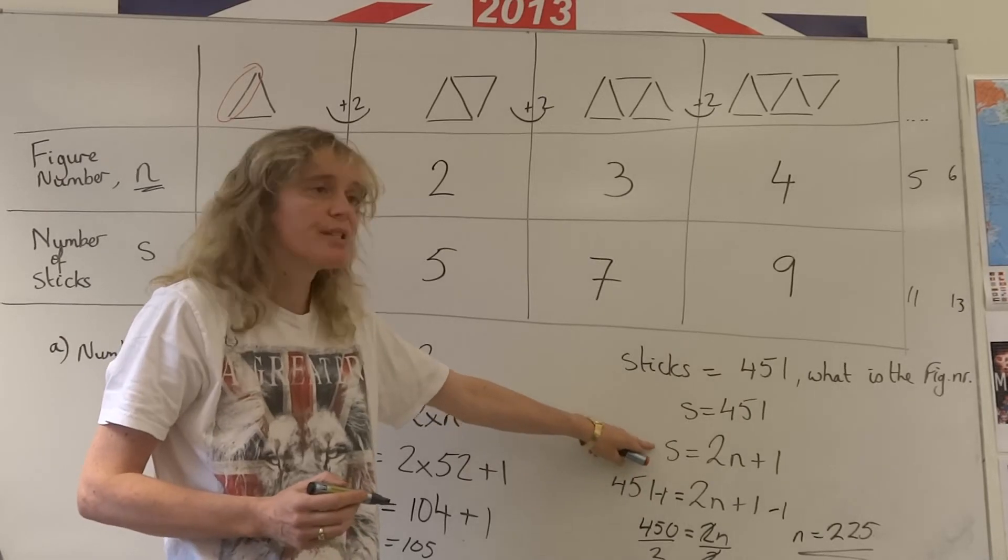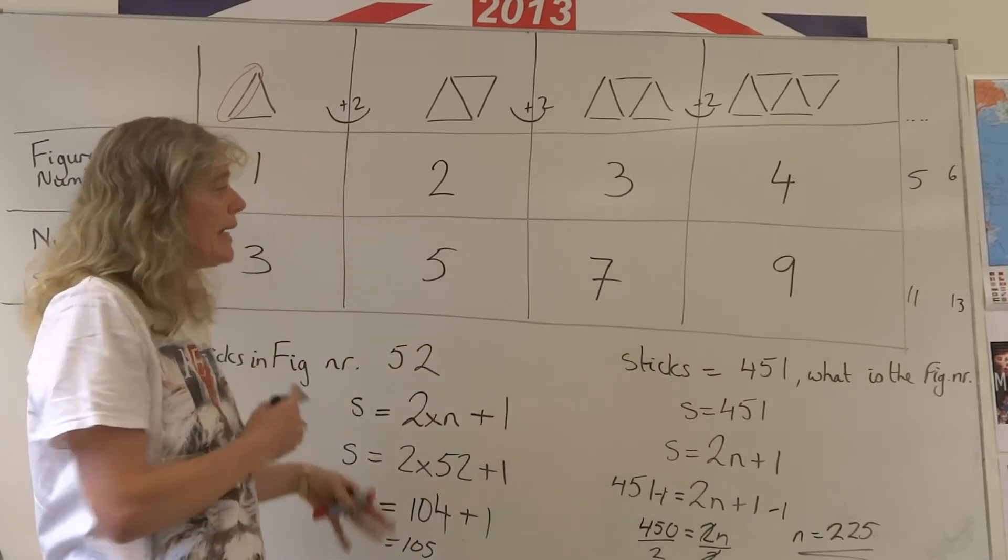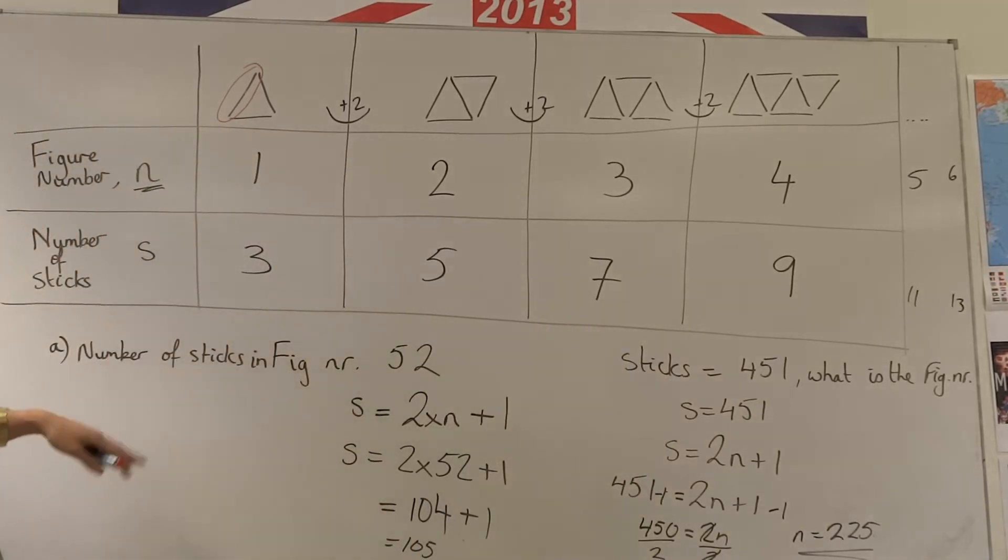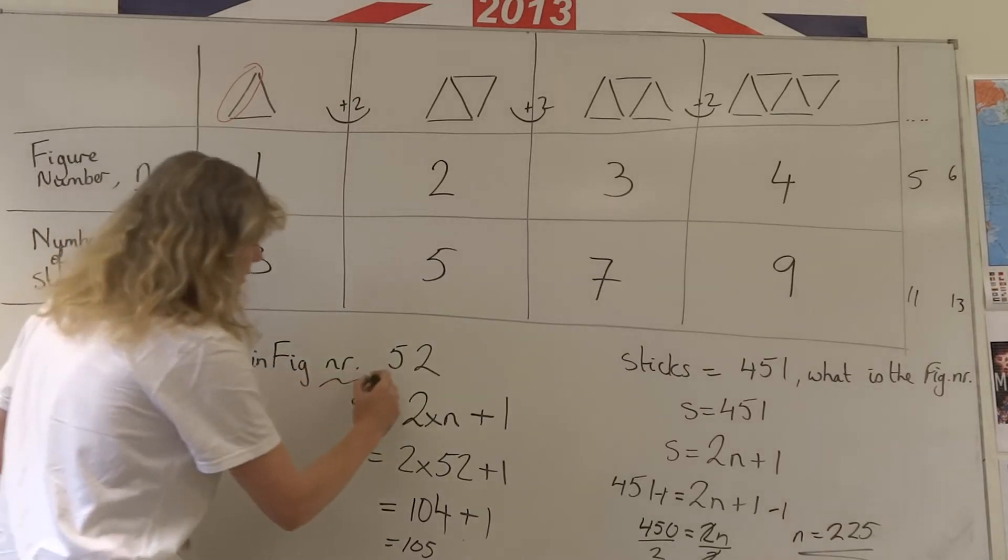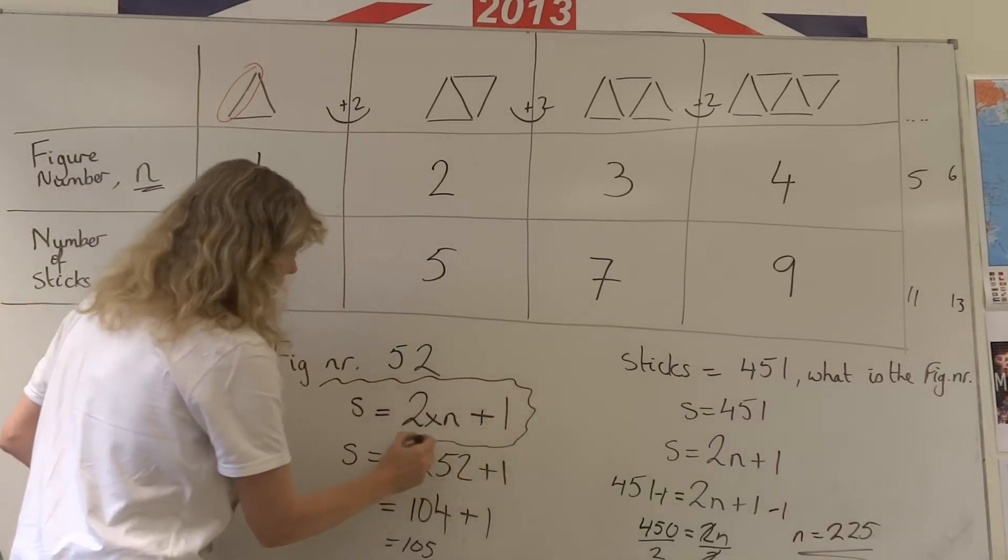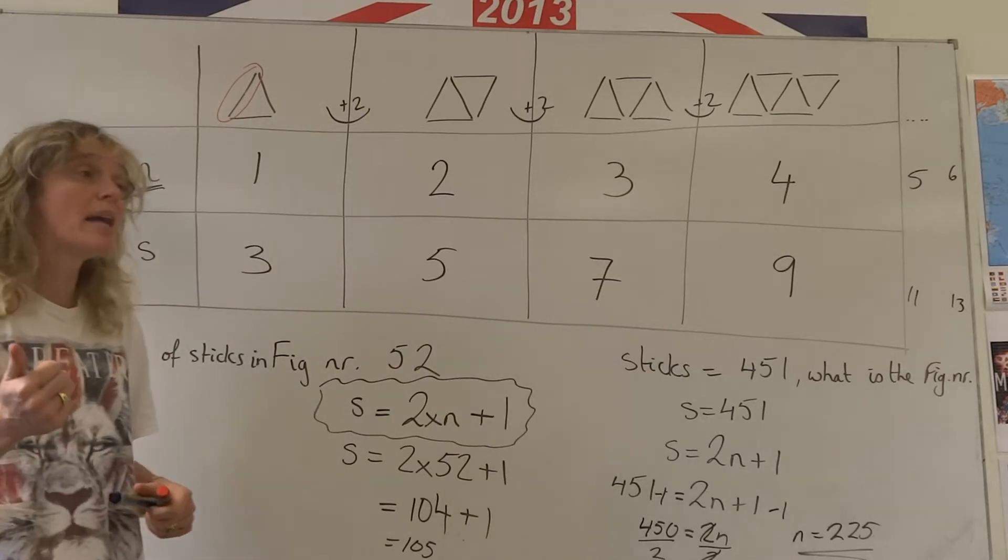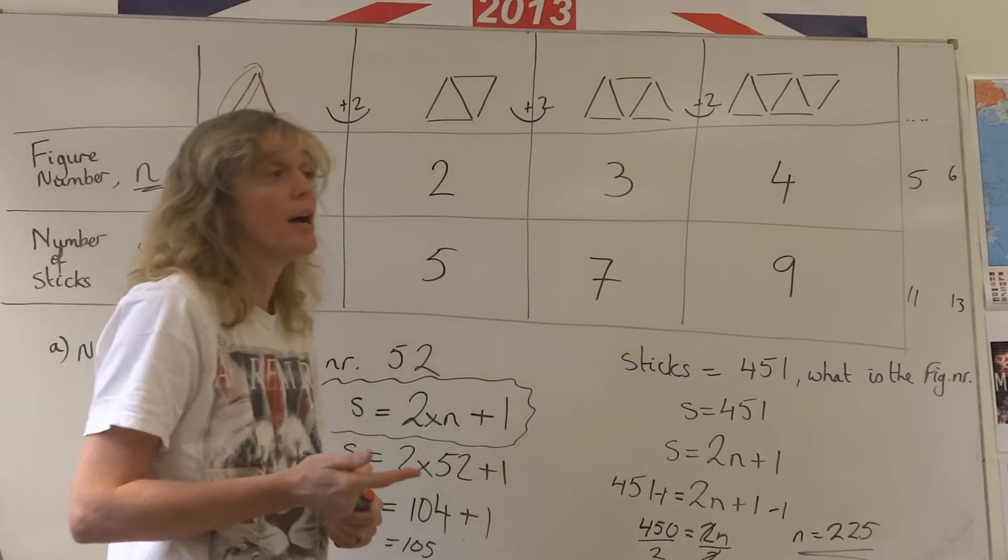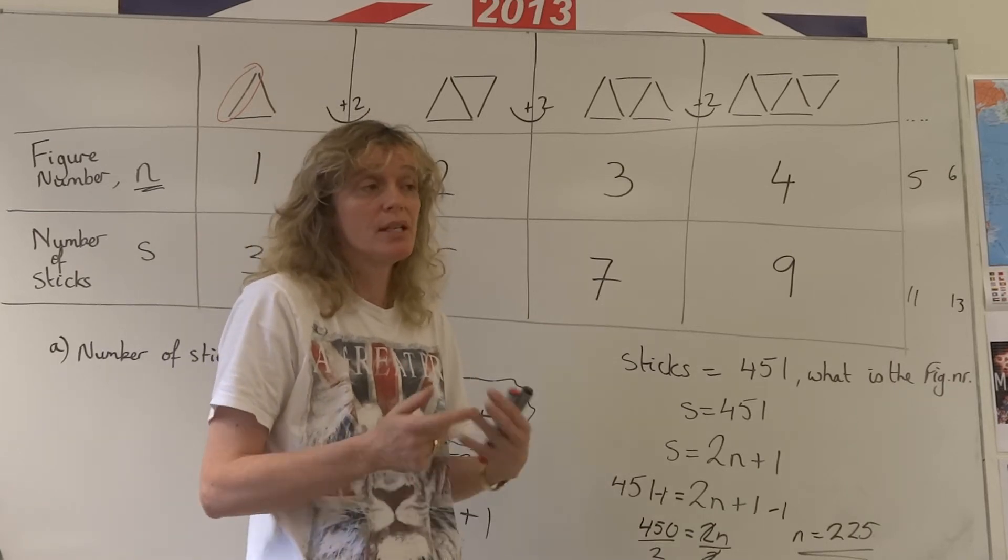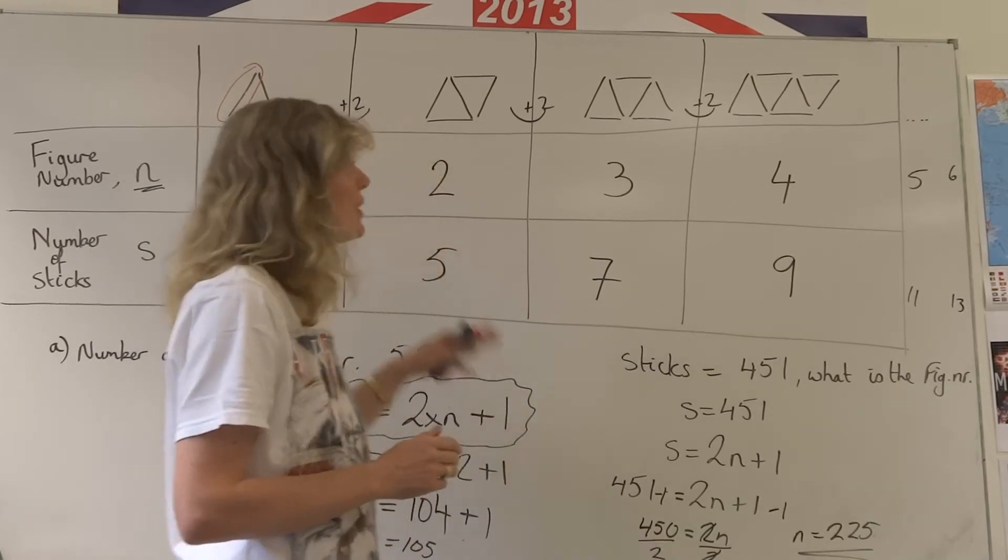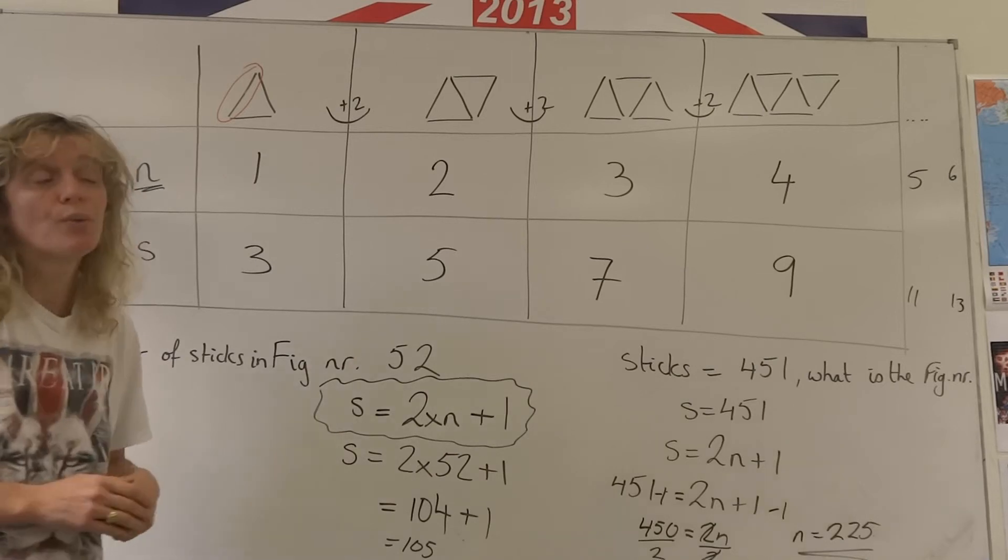So we're just using our algebra skills and going backwards. And now once you've worked out what this formula is, the 2n plus one, you can work out either the number of matchsticks or the figure number independent of what they give you. So this is an important skill to practice.